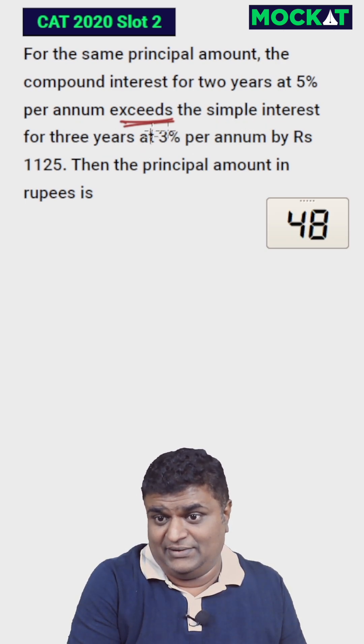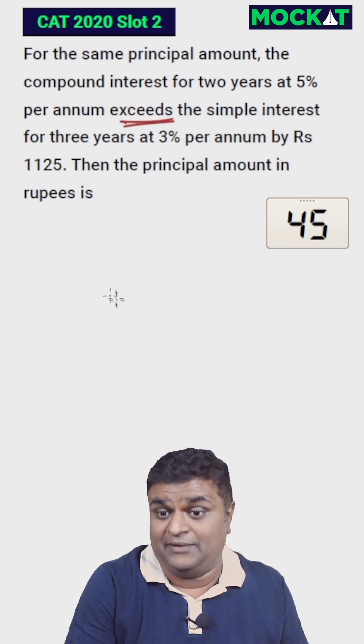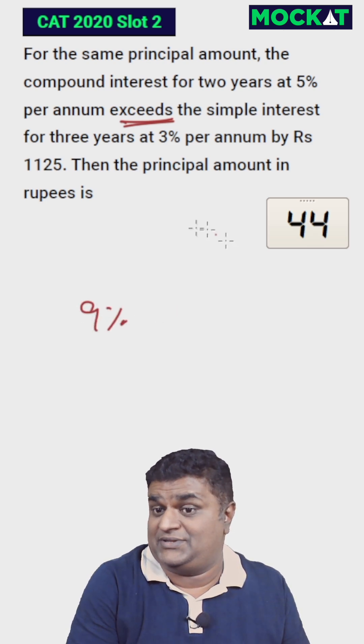Simple interest for 3 years at 3%: that's 3 plus 3 plus 3, a total of 9%. That's the easy part.